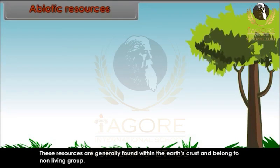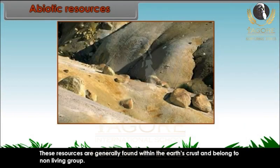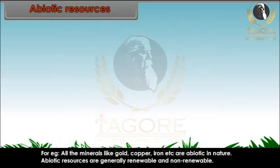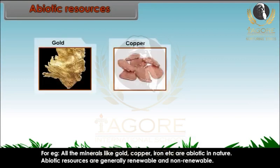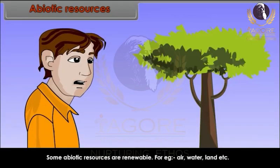Abiotic resources are generally found within the earth's crust and belong to the non-living group. For example, all the minerals like gold, copper, iron, etc. are abiotic in nature. Abiotic resources are generally renewable and non-renewable. Some abiotic resources are renewable, for example, air, water, and land.